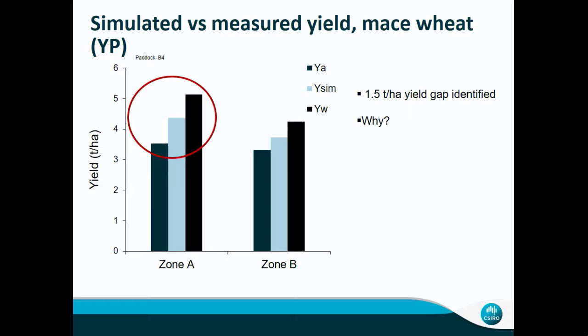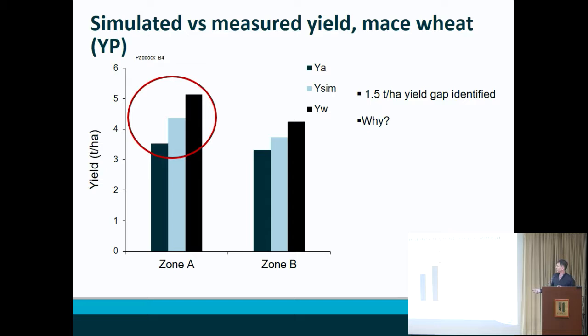Because we have classified the soil in each region, we are able to extract three measures. We have the actual yield the farmer achieved, extracted off the yield monitor on the harvester. We have the simulated yield, where we take the farmer's management and run the crop simulation model using that management. And then we have water-limited yield potential, where we put more inputs on if necessary — in this context, simulating what more nitrogen would have done in terms of generating yield.